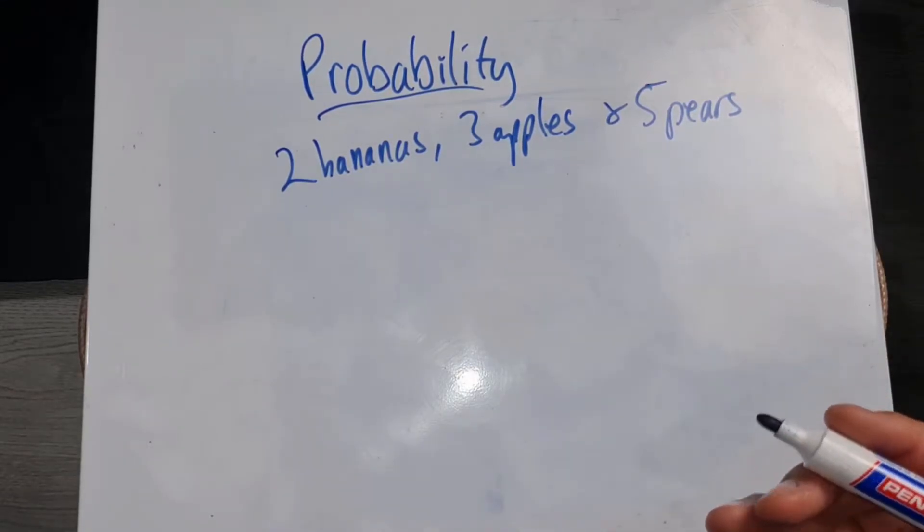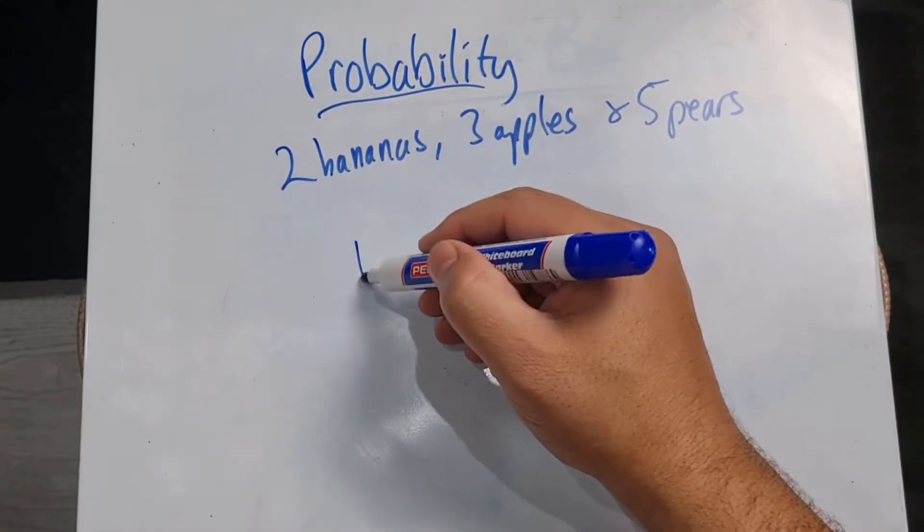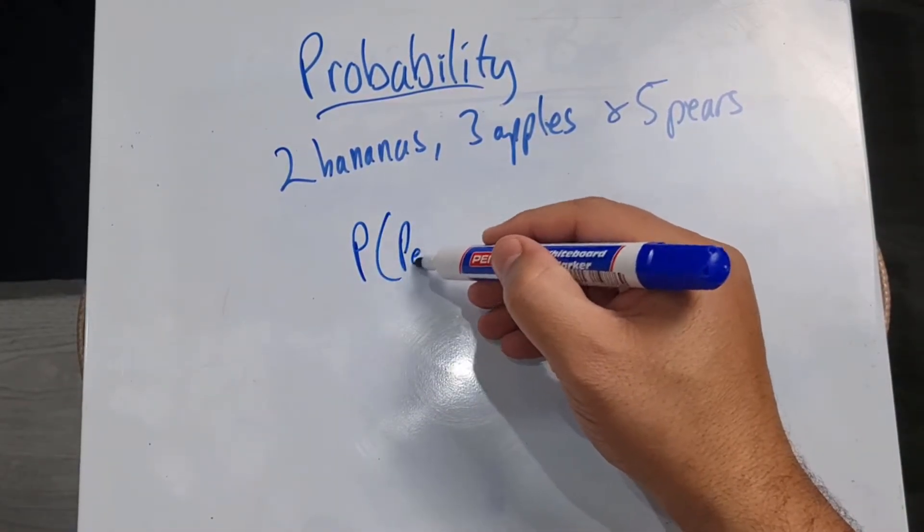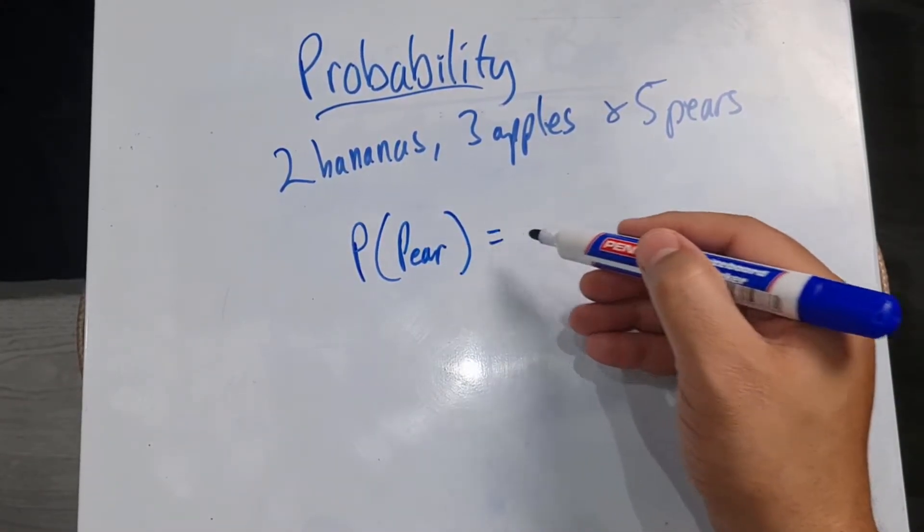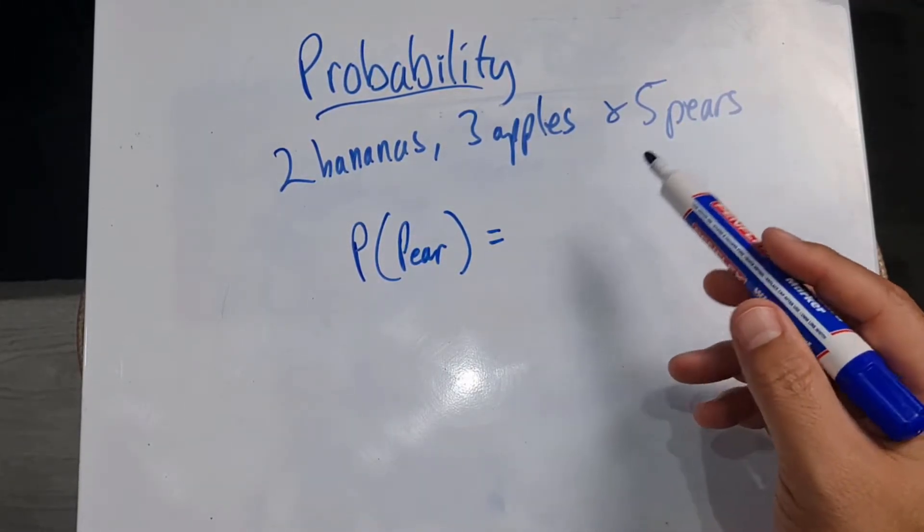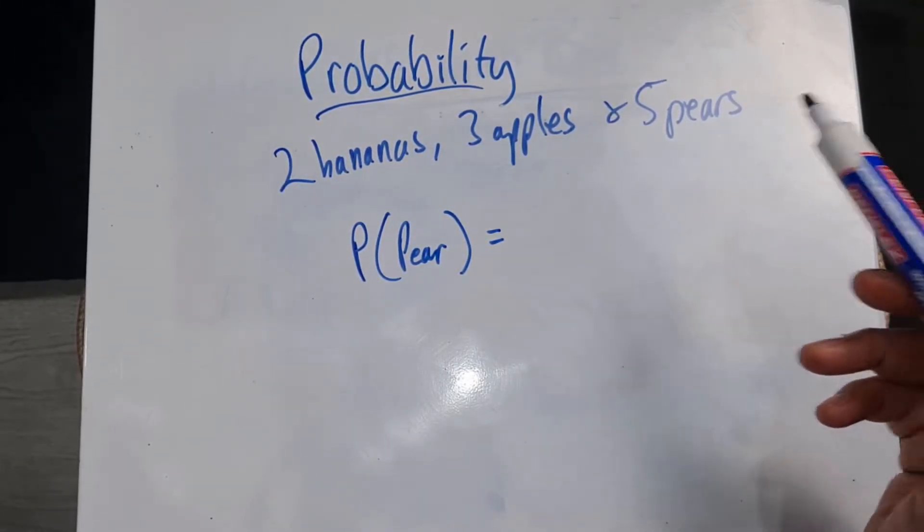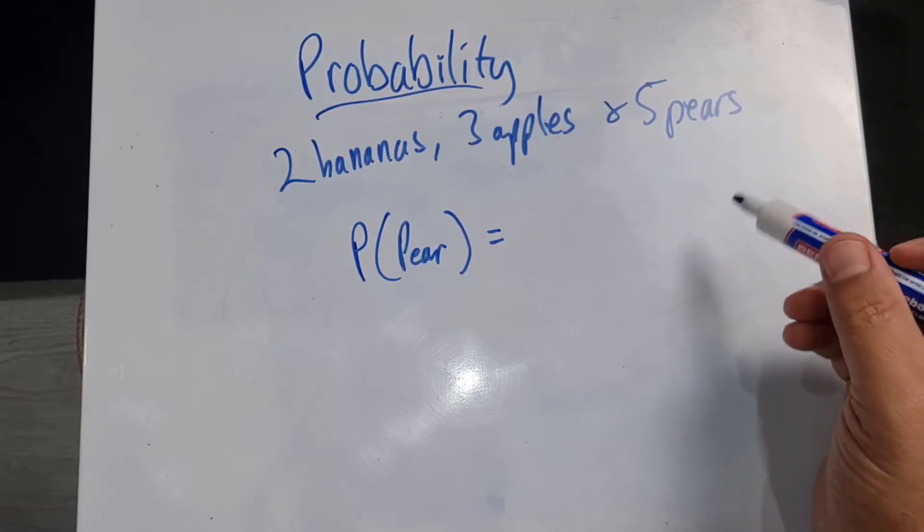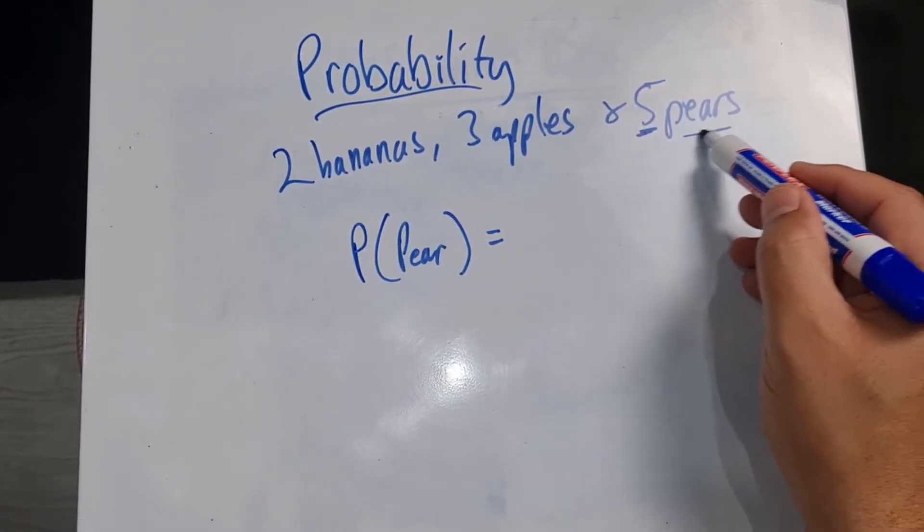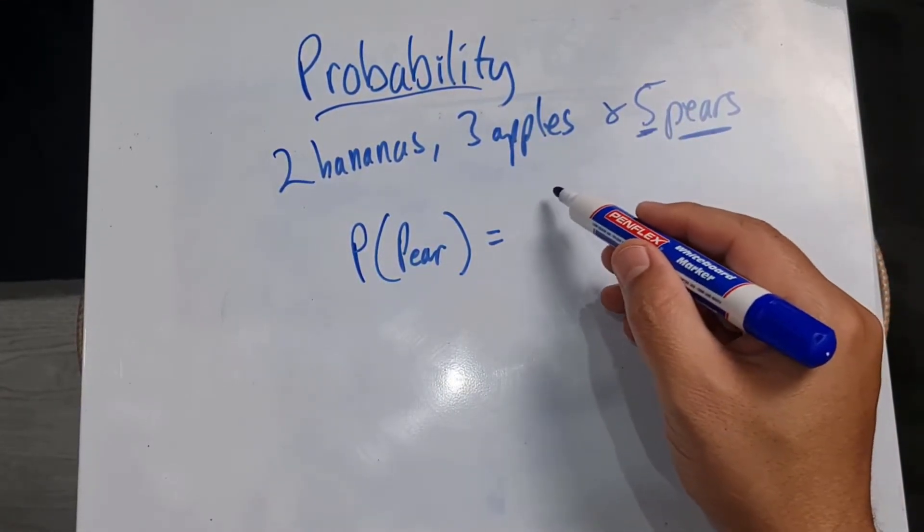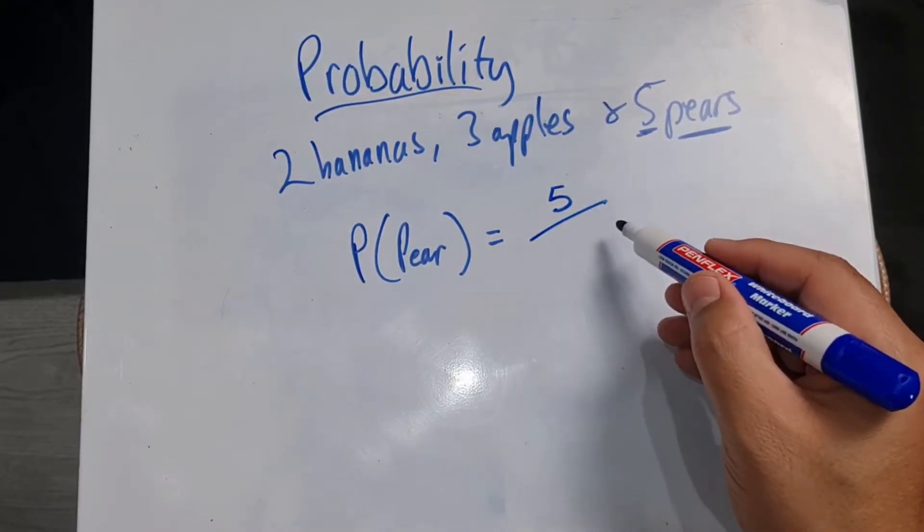Now using the exact same formula, they're going to ask, what is the probability of choosing a pear? So we have our probability and it's now going to be a pear. And we need to look at our pears because we're saying, what are the number of ways that the event can occur? So how many ways can this particular event occur? And that would be five out of...